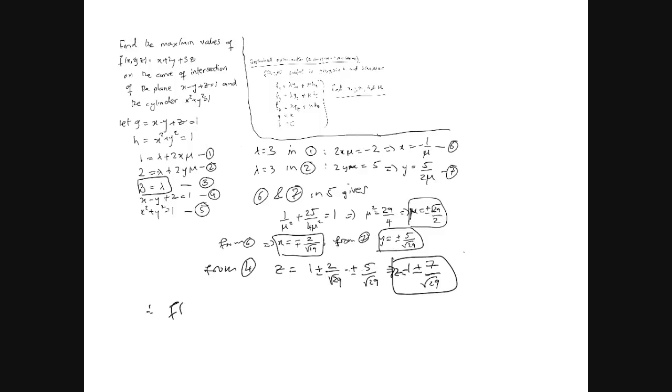Therefore, f of minus plus 2 over root 29, y is plus minus 5 over root 29, and z is minus 1 plus minus 7 over root 29. When I substitute these values in the original function, which is x plus 2y plus 3z, x is as it is, so it's just minus plus 2 over root 29.